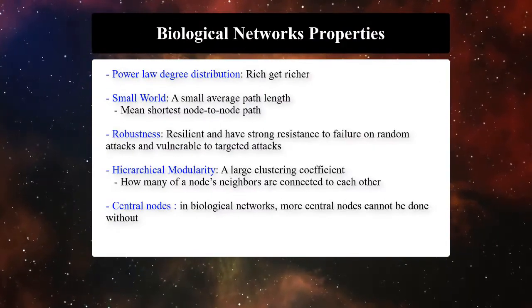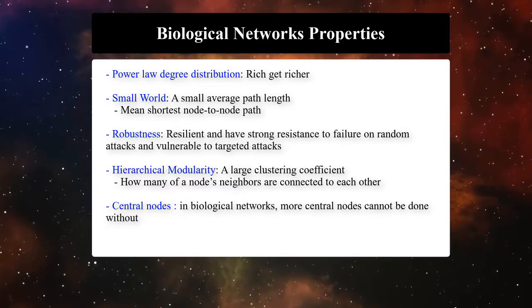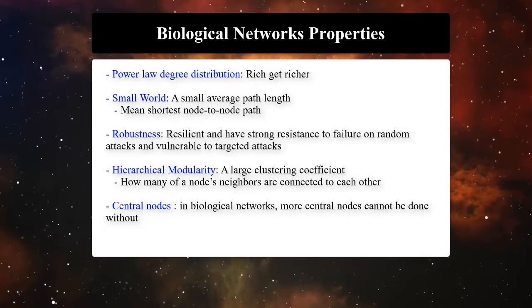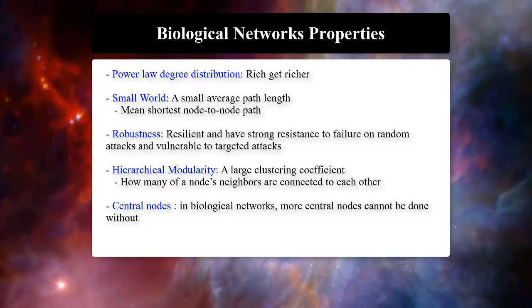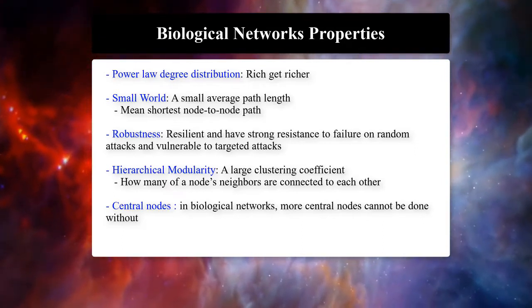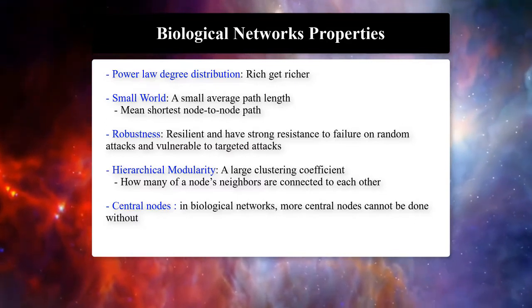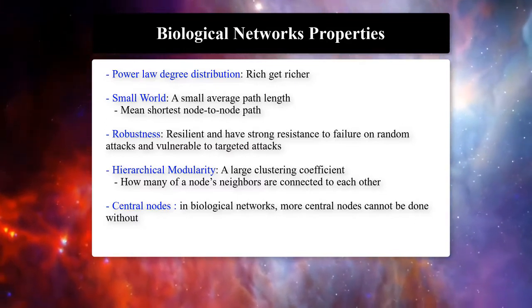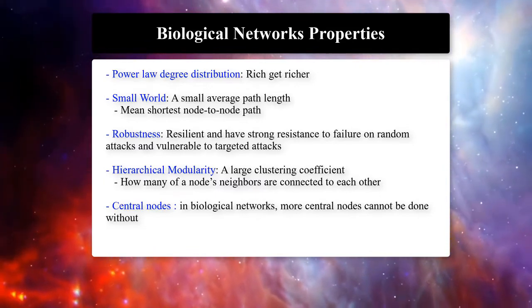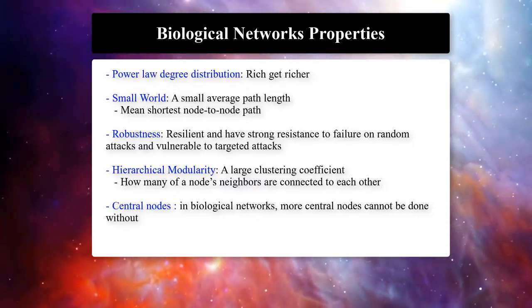Protein-protein interaction networks, transcriptional regulatory networks, and metabolic networks have been studied and their structural properties are reported to be similar. The observed properties are not in agreement with traditional random graph models for complex networks. Their degree distribution follows a power law degree distribution, basically which gets richer.